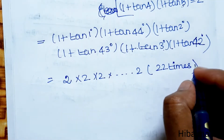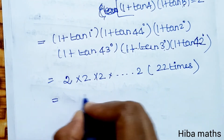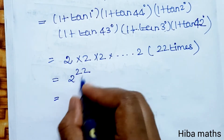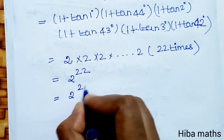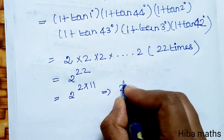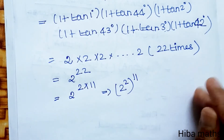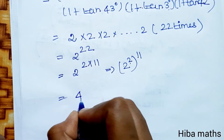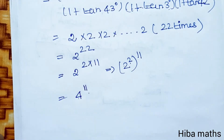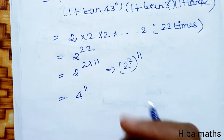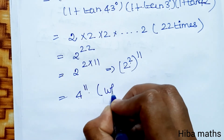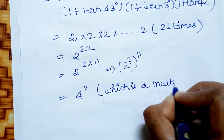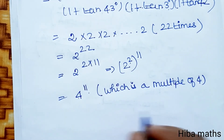The total product is 2^22. We can write 2^22 = 2^(2×11) = (2^2)^11 = 4^11. Therefore the product equals 4^11, which is clearly a multiple of 4.